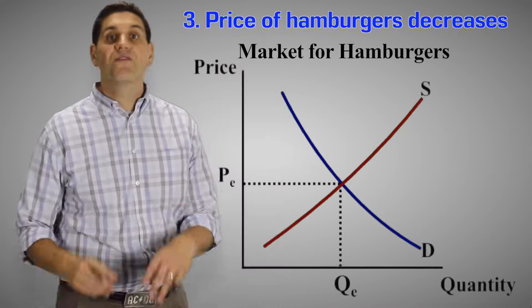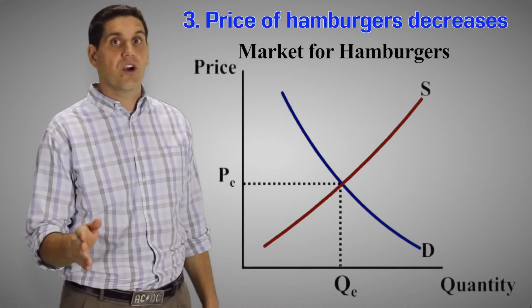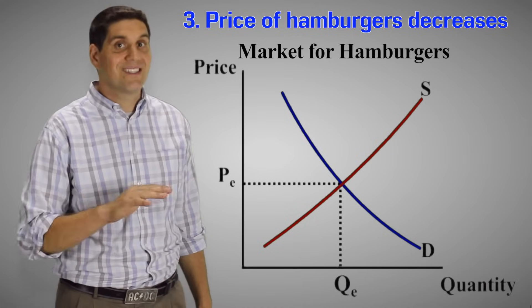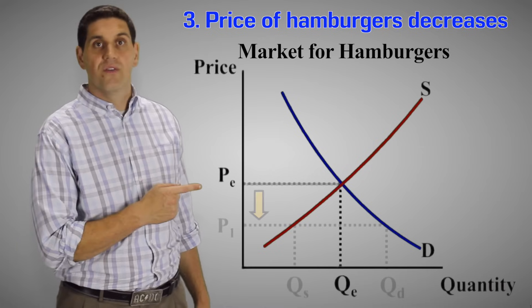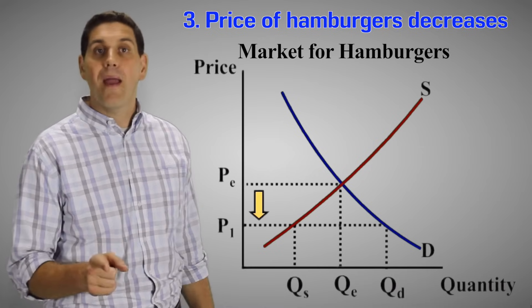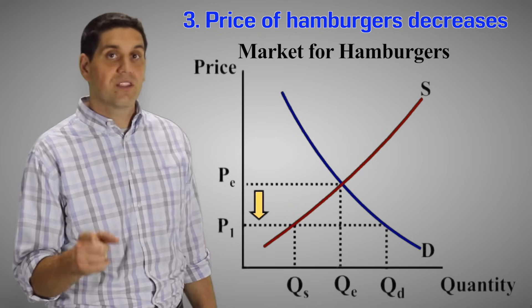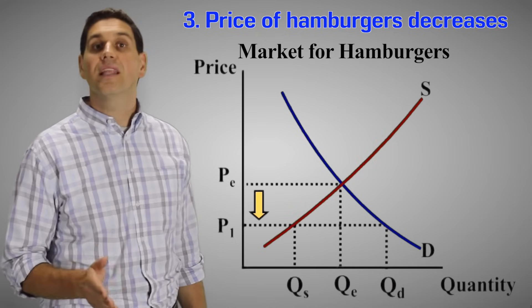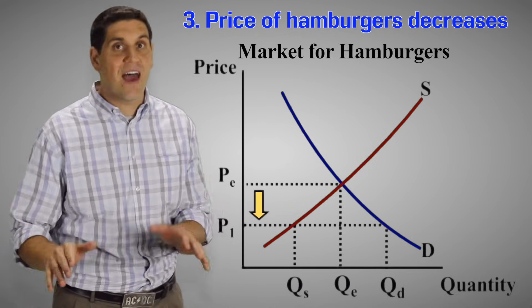For number three, if the price of hamburgers decreases, that's not going to shift the curve. Remember, a change in price does not shift the curve. It moves along the curve. So if the price goes down, the quantity demanded is going to increase. The quantity supplied is going to decrease and that's going to lead to a shortage. Don't forget price never shifts the curve.